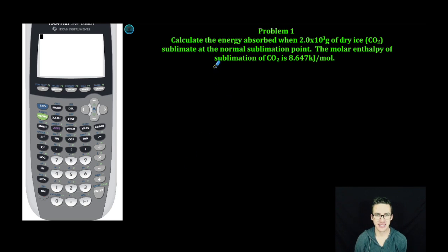Let's take a look at problem number one. Calculate the energy absorbed when 2.0 × 10³ grams of dry ice sublimate at the normal sublimation point. The molar enthalpy of sublimation of CO2 is 8.647 kilojoules per mole.